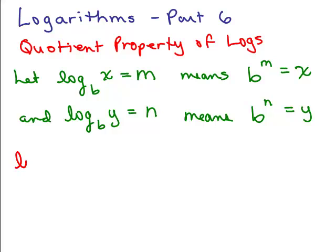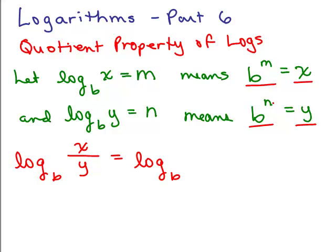Let's say I wanted to know what the log base B of X over Y was equal to — in other words, we're taking the log of a quotient. What we're going to do is plug in our values for X and Y. X is the same thing as B to the M and Y is B to the N. So I've really got the log base B of this quotient: B to the M over B to the N.